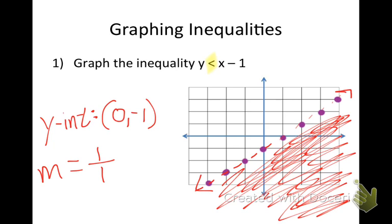My slope is positive 1 because it's what's associated in front of the x — that's like a positive 1, written as positive 1 over 1. My y-intercept is negative 1. That's the answer right there.